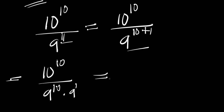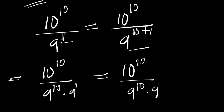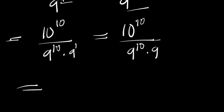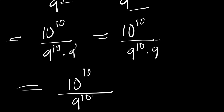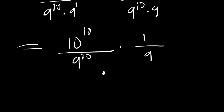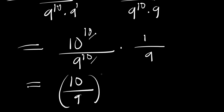Since 9^1 is 9, we can split this as (10^10 divided by 9^10) times (1 divided by 9). Since both have exponent 10, we can combine the bases to get (10/9) raised to the power of 10, times 1 divided by 9.